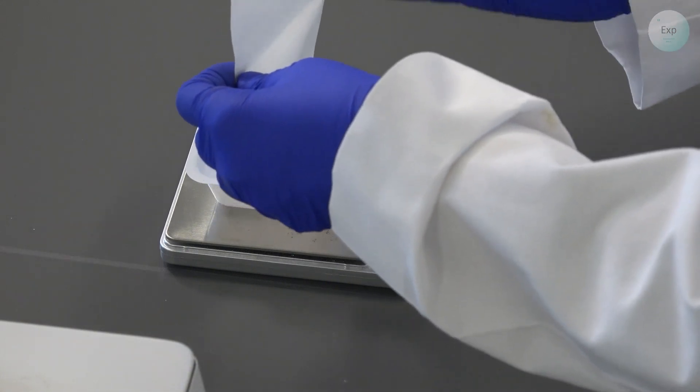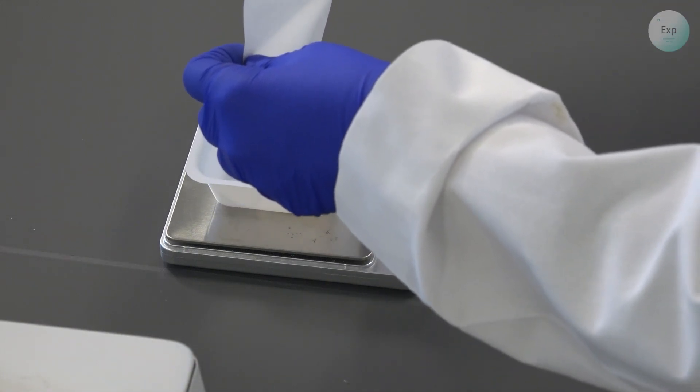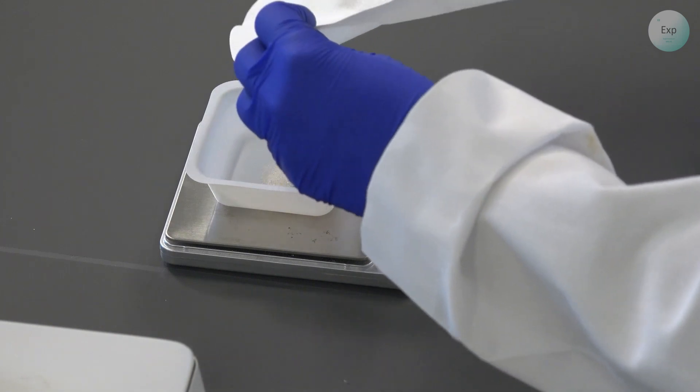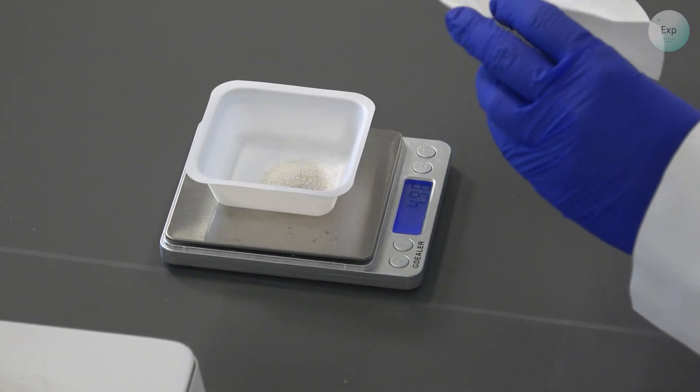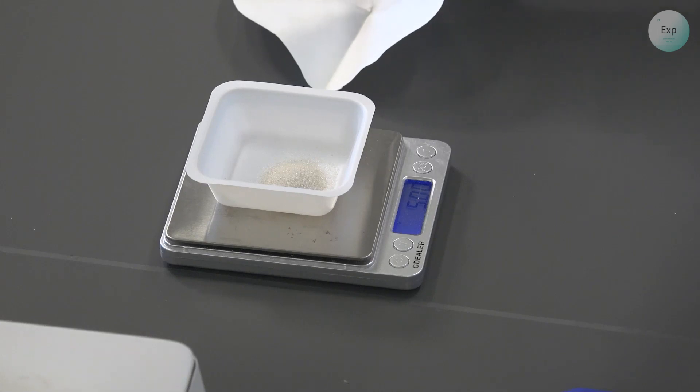If we did a good job, then the sand should very easily let go of the paper and should find itself in the weighing boat. There are probably some very fine sand particles stuck to the paper, but we expect some loss. Still, our recovered mass for the sand is 5.06 grams.